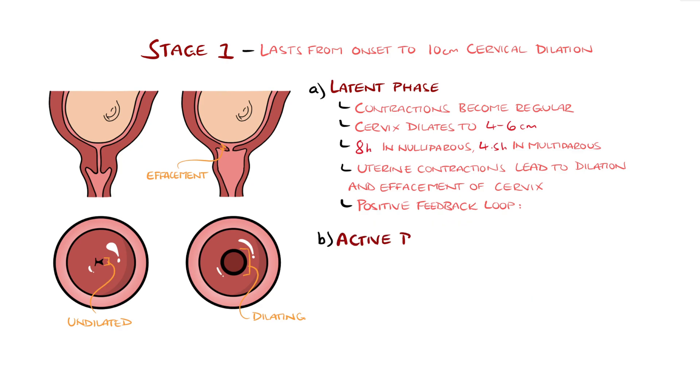The second part of the first stage is the active phase, featuring rapid dilation from 4-6 cm to 10 cm, which is considered fully dilated. The contractions here are typically intense and happen every 30 seconds and last 60-120 seconds, meaning they can overlap.